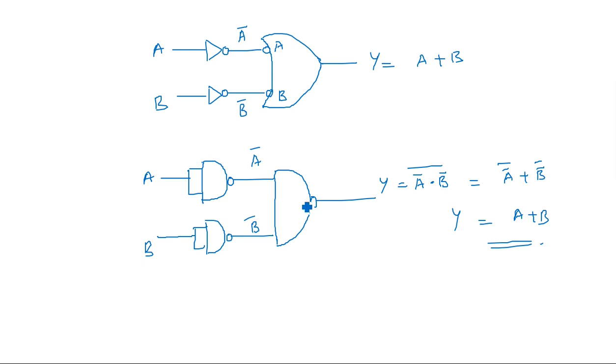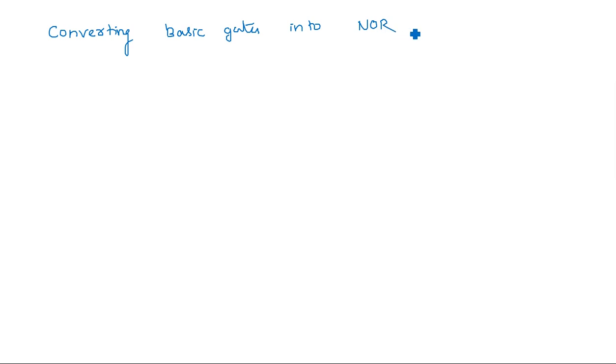The same approach can also be achieved with NOR gates. Now let us see how the three basic gates — AND, OR, and NOT — can be converted into NOR gates.